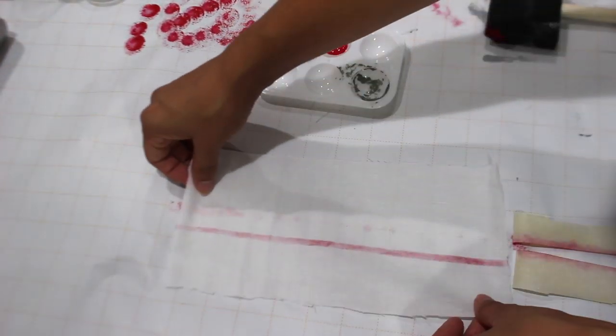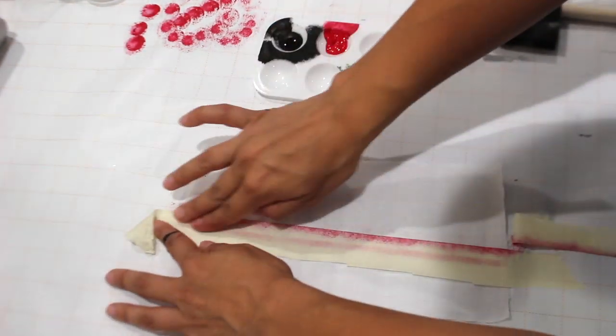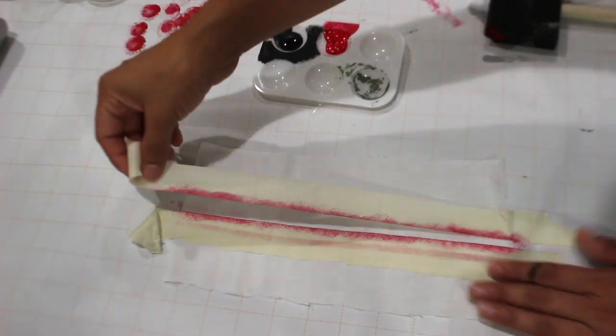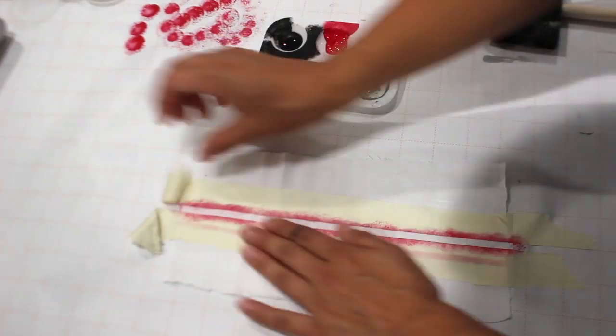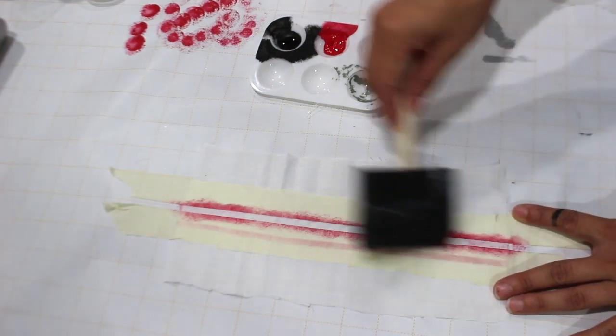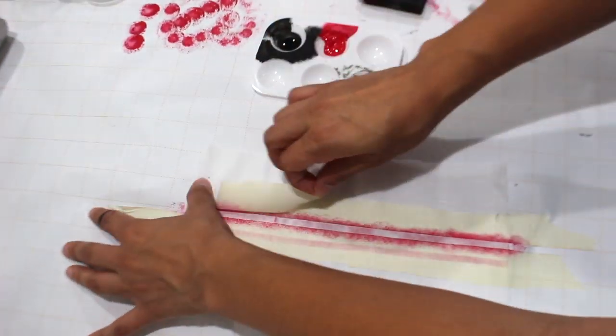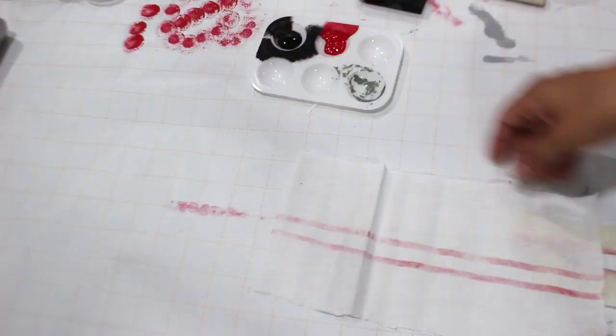That's because before making this one I made a black striped one. It also would probably be better to iron the fabric first, but I didn't do that. So now I'm just gonna apply the second stripe.